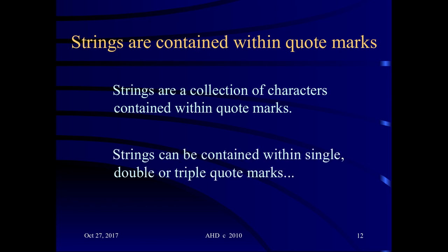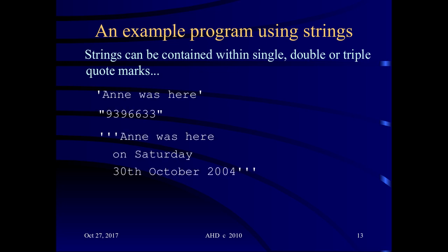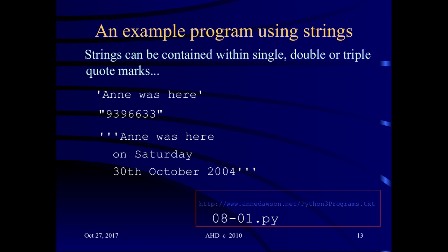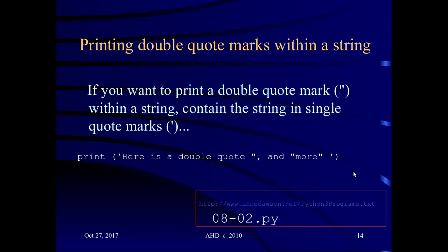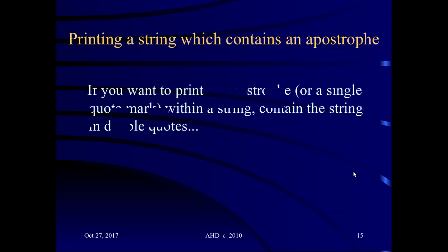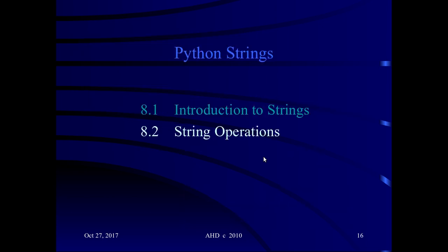Strings are contained within quote marks, and those quote marks can be single, double, or triple. This is single quote marks, this is double quote marks. If you want a string to span over several lines including the new lines, you can use triple single quote marks. If you click on the example program link, program 08-01.py shows this. If you want to print a double quote mark within a string, enclose your string in single quotes — see program 08-02. If you want to print a string containing an apostrophe, enclose your string in double quotes, as also shown in program 08-02.